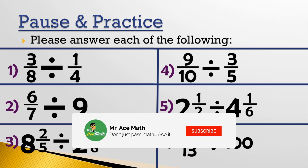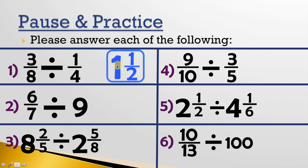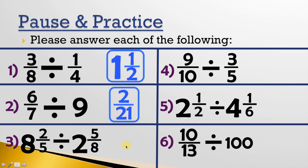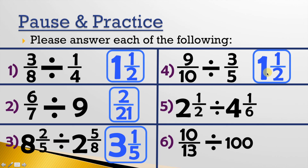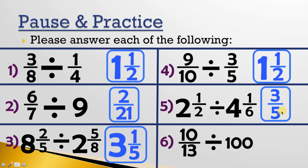Let's take a look at our answers. Number 1 is 1 and a half. Number 2 is 2 over 21. Number 3 is 3 and 1 fifth. Number 4 is 1 and a half. Number 5 is 3 fifths. And number 6 is 1 over 130.